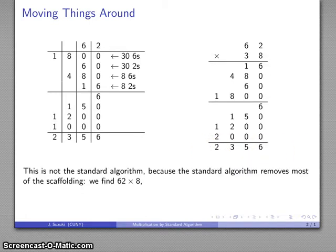Now, you might notice this actually isn't the standard algorithm. There's a lot more here than we usually write for the standard algorithm. What do we do? Well, we generally go 62 times 8 and figure out what that is. And that's 496. So, again, that's combining the 8 times 2 with the 8 times 60 into a single product.